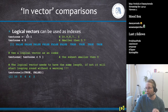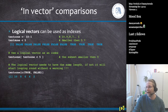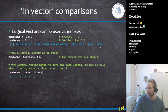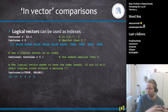Logical vectors created by comparison operators can be used as indexes. For example, a variable `ten_to_1` contains numbers 10 down to 1. Asking `ten_to_1 < 5` returns FALSE for the first several elements and TRUE for the last four. You can then use this to index the vector: `ten_to_1[ten_to_1 < 5]` gives back only 4, 3, 2, and 1.